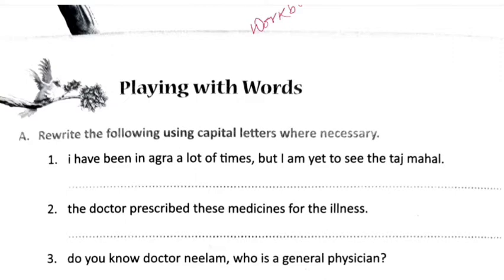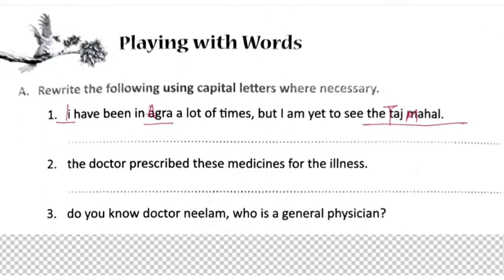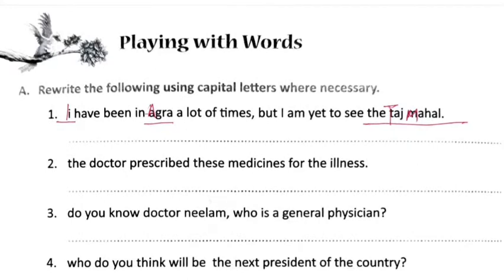First sentence: 'I have been in Agra a lot of times but I am yet to see the Taj Mahal.' Taj Mahal should be capital, and Agra — we have to look at that too. Taj Mahal needs to be capitalized here.